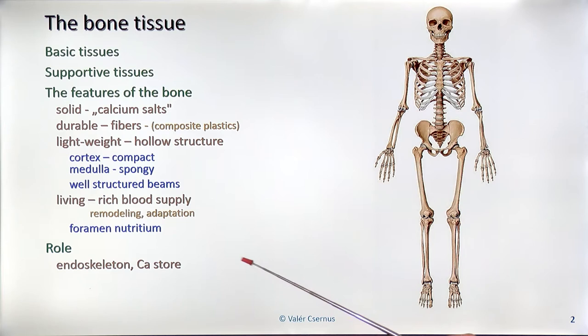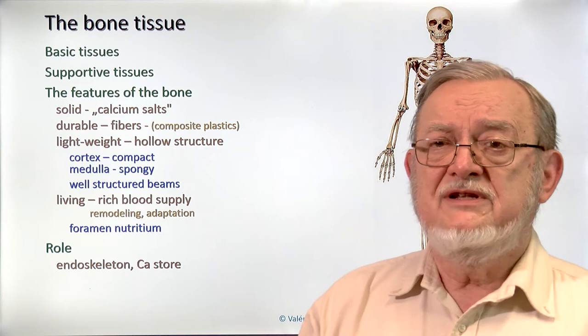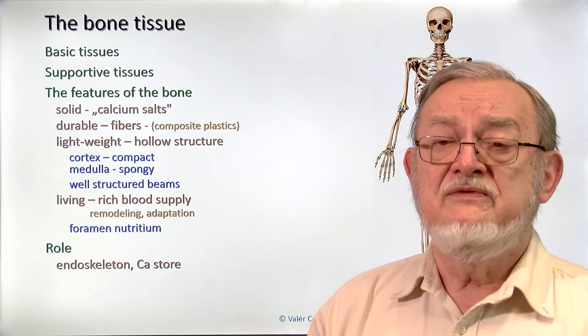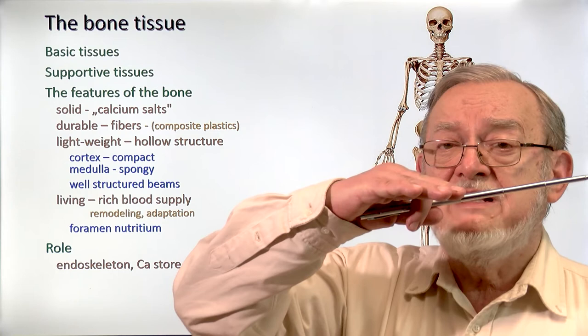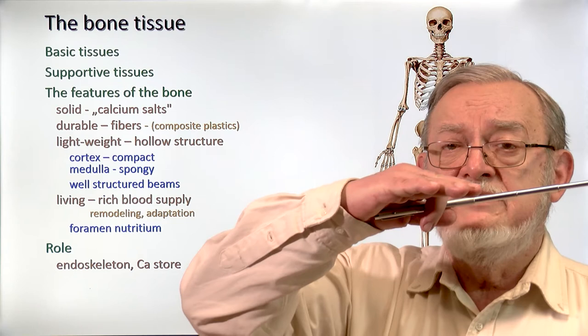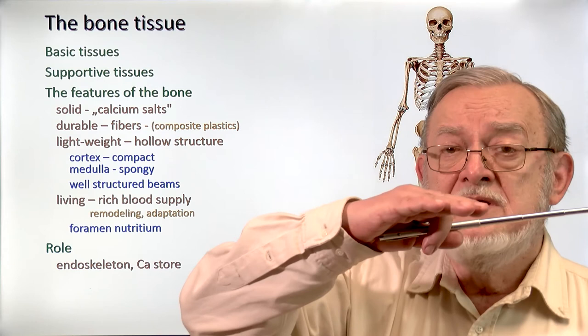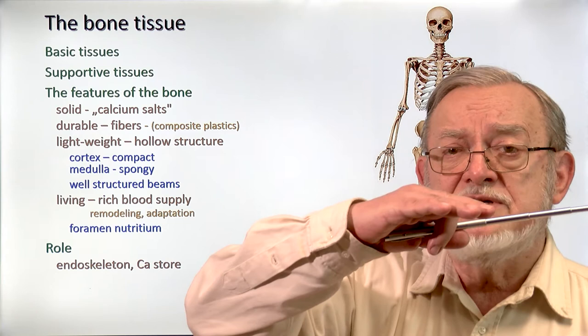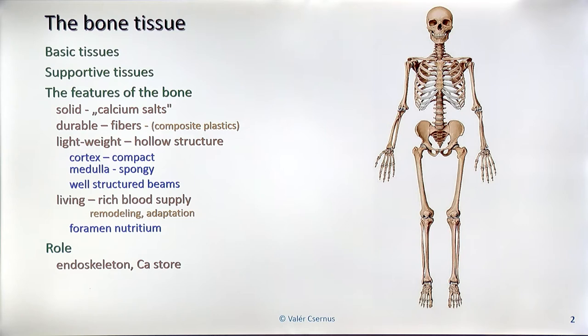The other important function of bones is as a calcium store. Calcium is one of the most important signal transmitters in our body, both intracellularly and between cells, and must be maintained at a very even blood level — a slight increase or decrease can have serious consequences. Because calcium intake is not regular, the bones buffer it: if you take in less calcium than necessary, it dissolves from bone; if you eat more than necessary, it deposits into the bone. So the bone is a very important buffer for calcium metabolism.